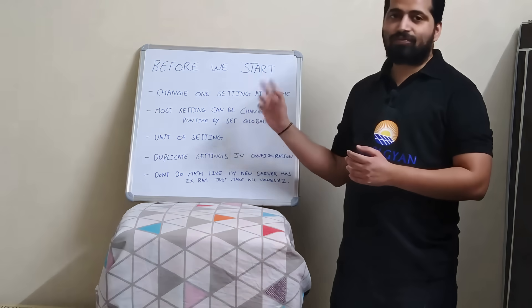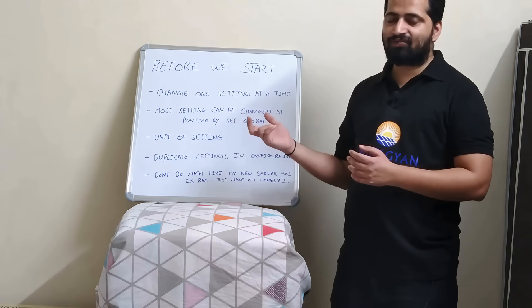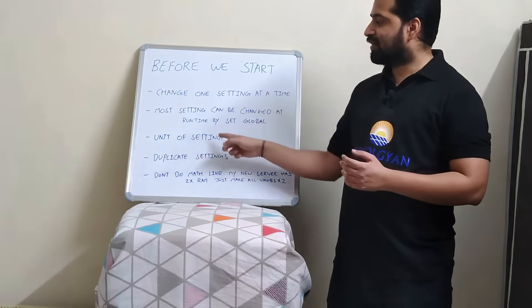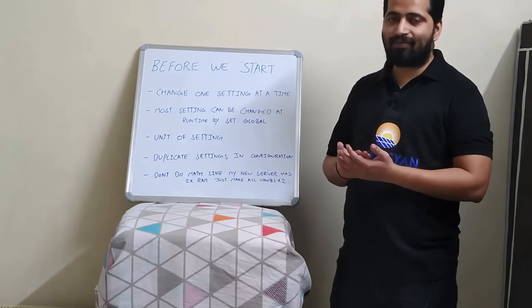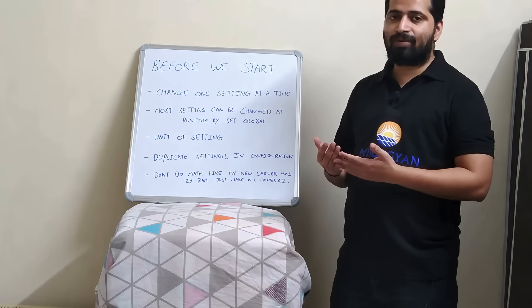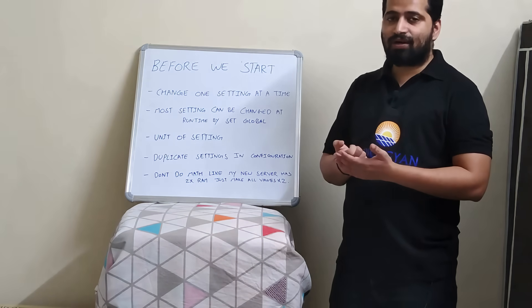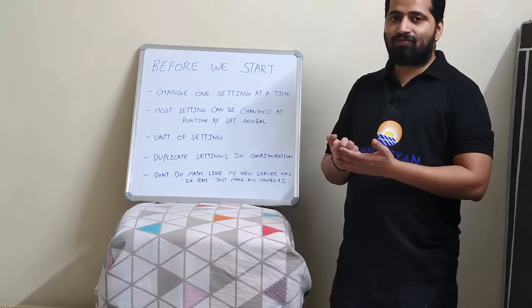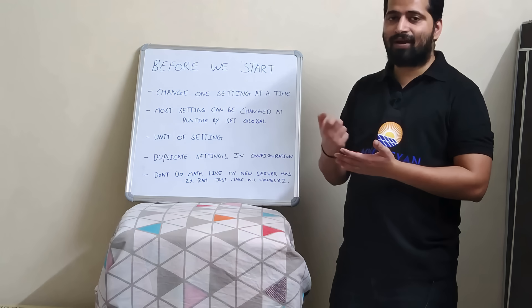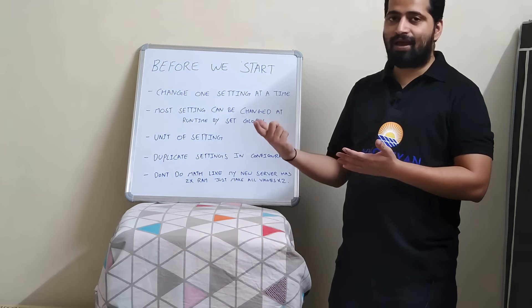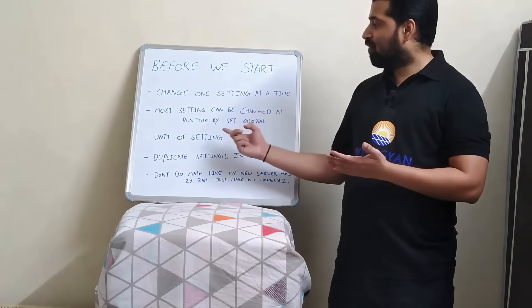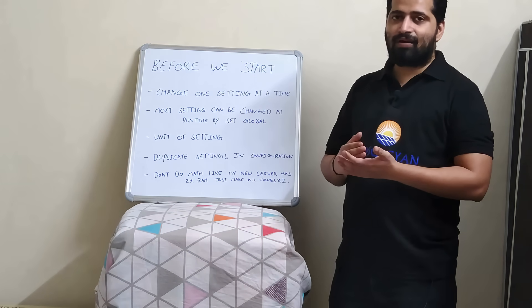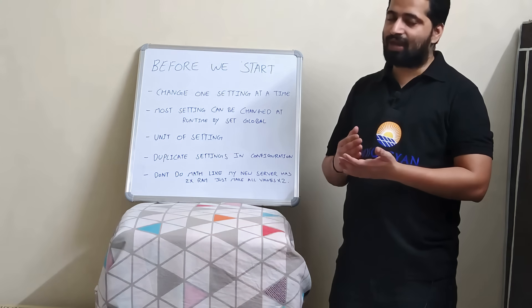So if it is a dynamic variable, use SET GLOBAL instead of editing the config file directly. One of the most important things is the unit of the setting. innodb_buffer_pool_size should be set in bytes, whereas max_connections is dimensionless. You should remember what unit each variable requires — bytes, MB, or dimensionless — because the impact is huge if you confuse them. Check the MySQL website to verify the unit of each setting.